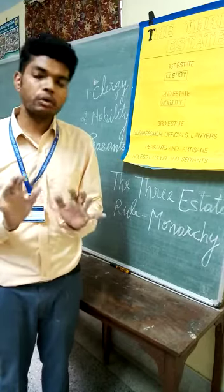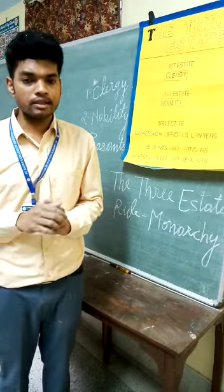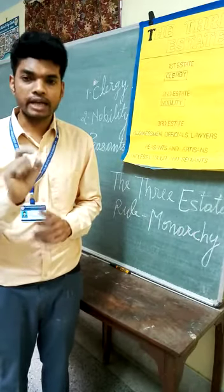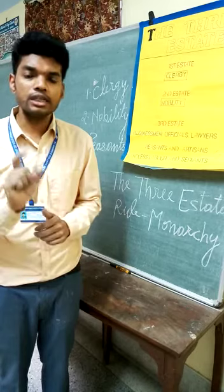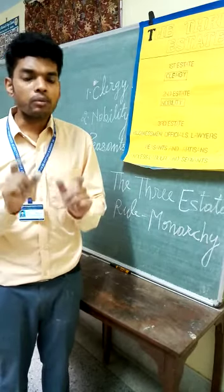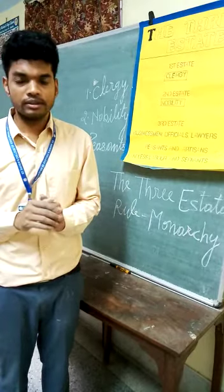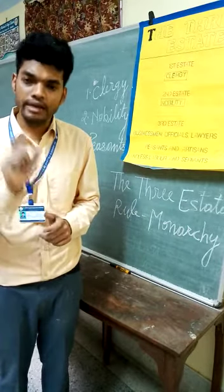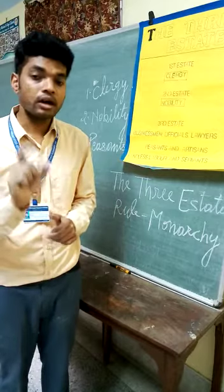Now I have two questions for you. Question number one: how many groups were formed in French society? Three groups were formed. What was the main reason of division? To collect heavy taxes from the people of the third state.